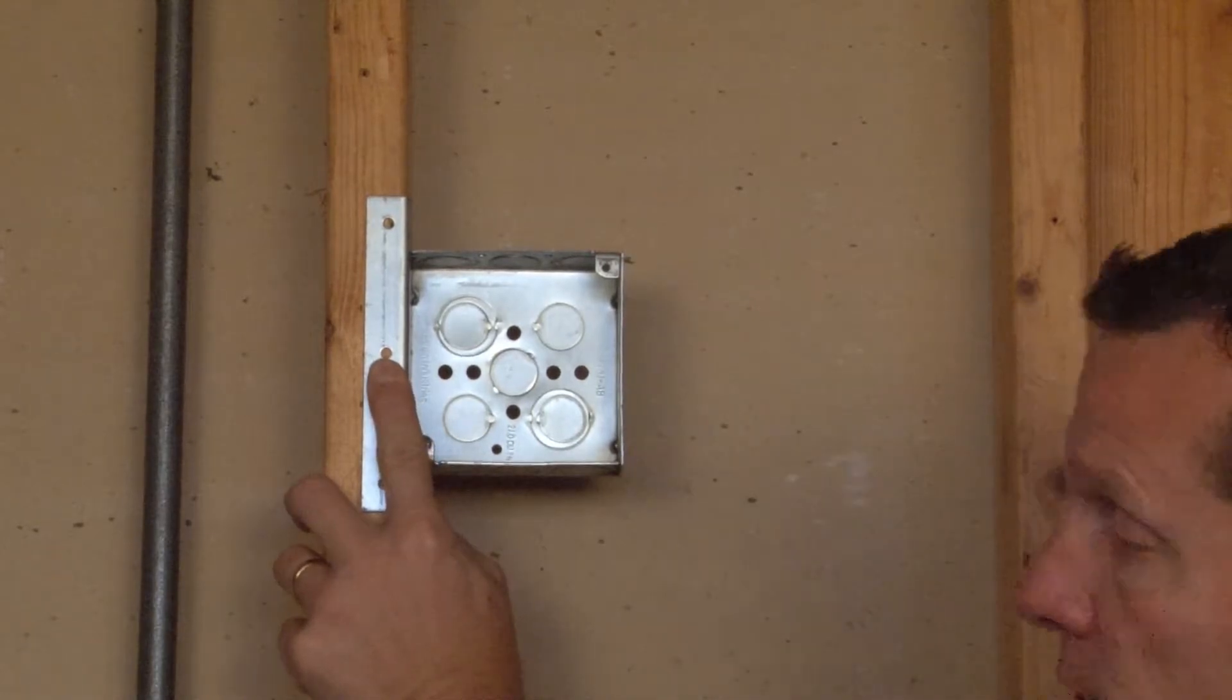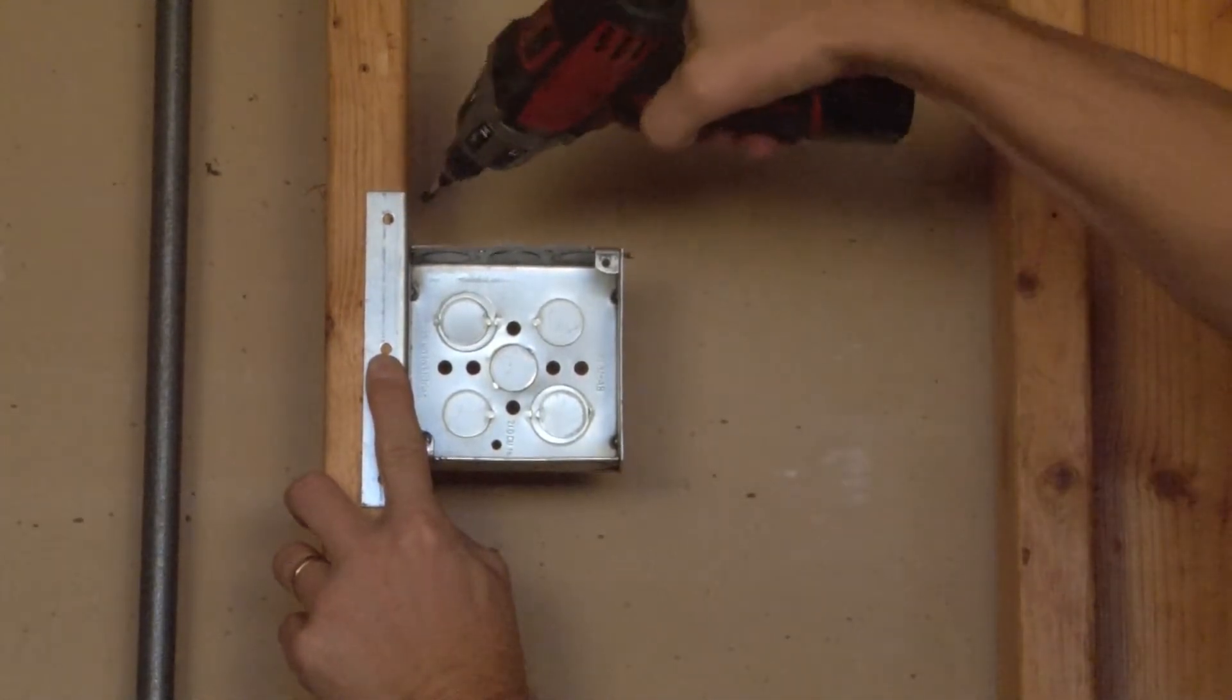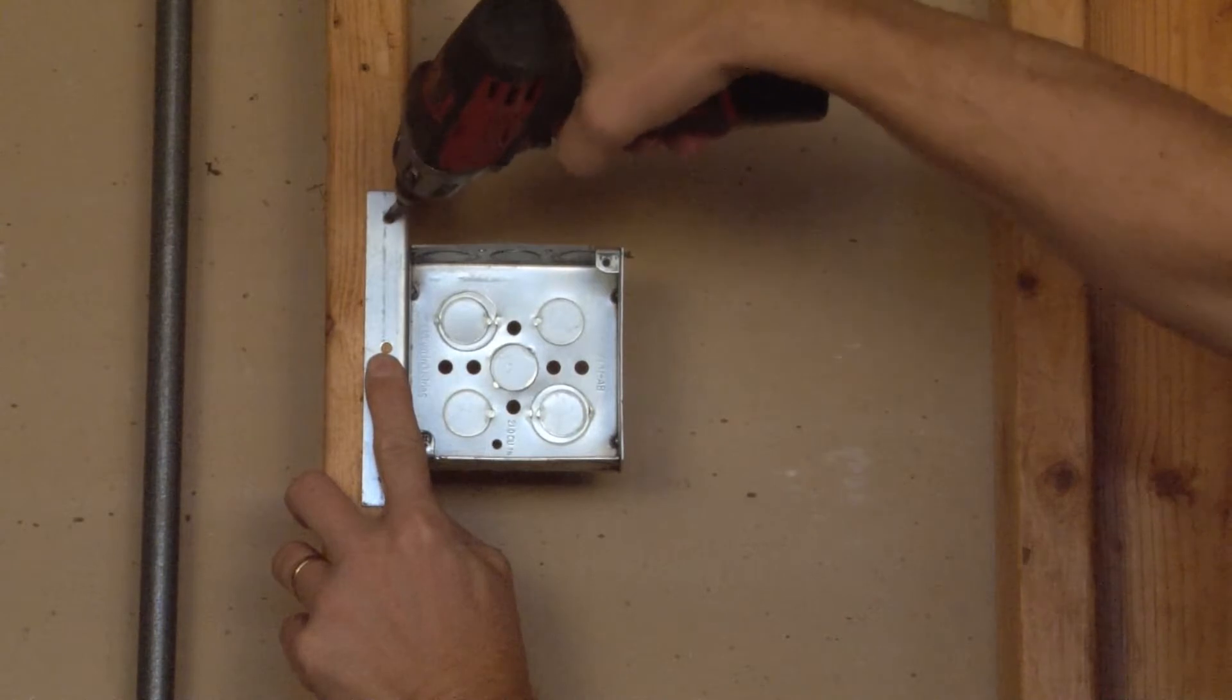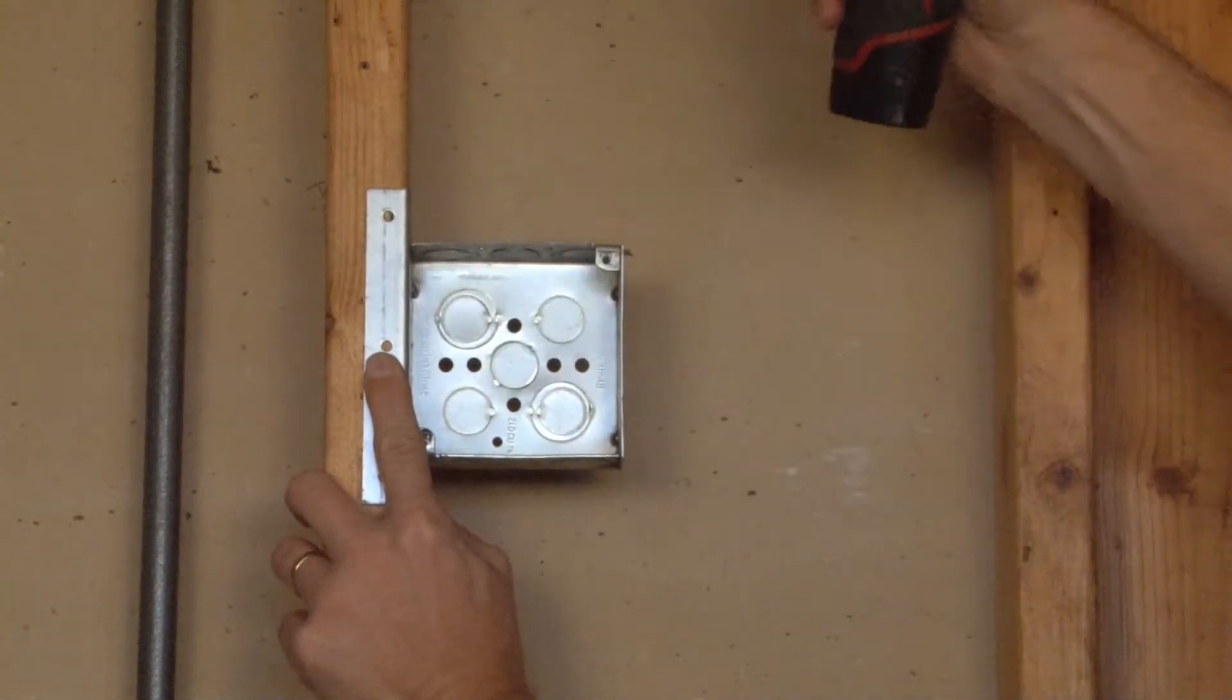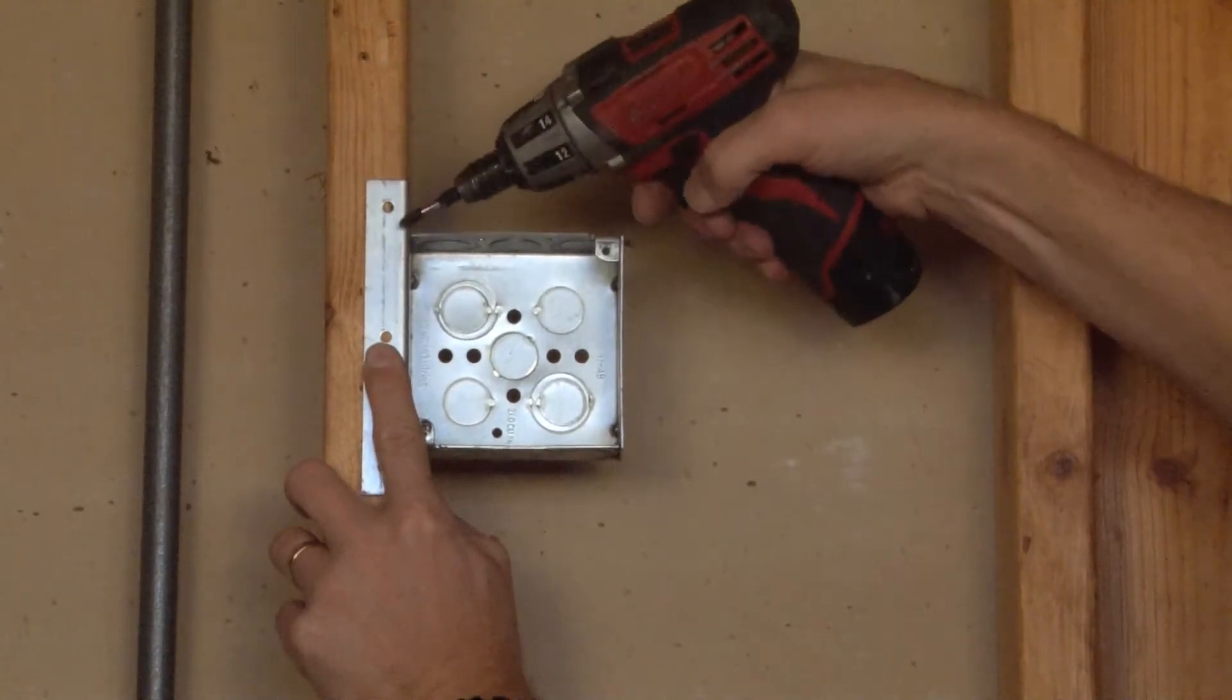The installer takes his screw gun and can either mount directly to the face of the stud with the screw. It's recommended that you use a taper head screw so the drywall doesn't bump out.